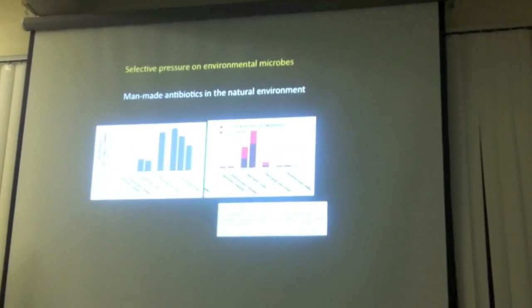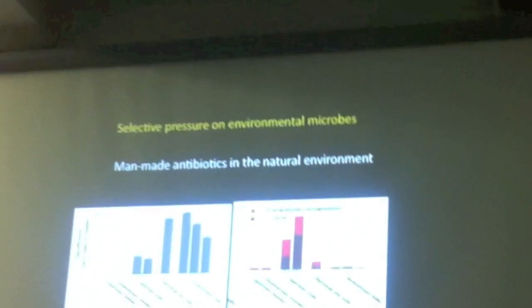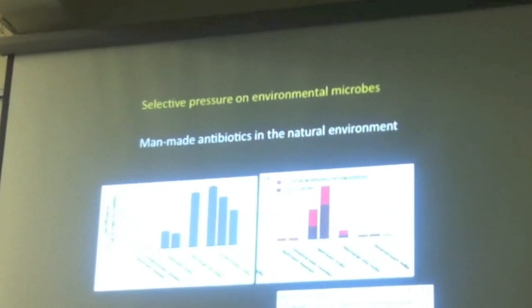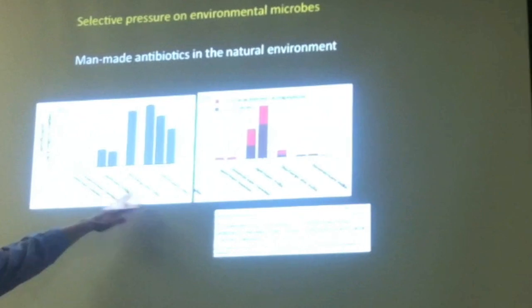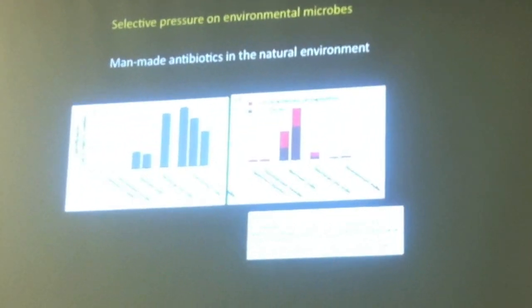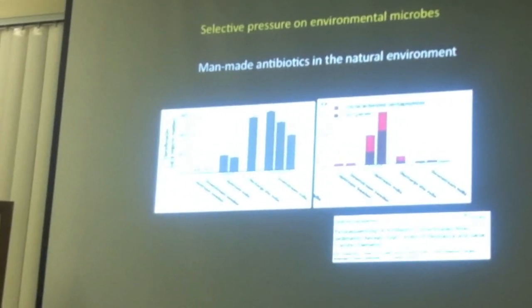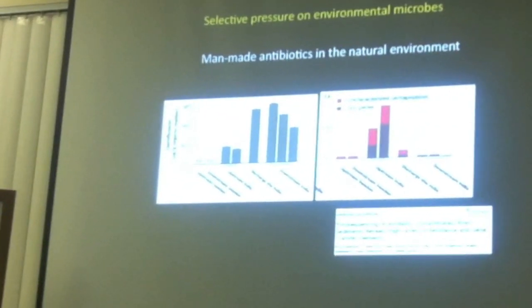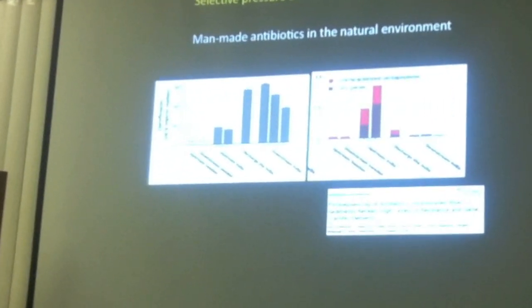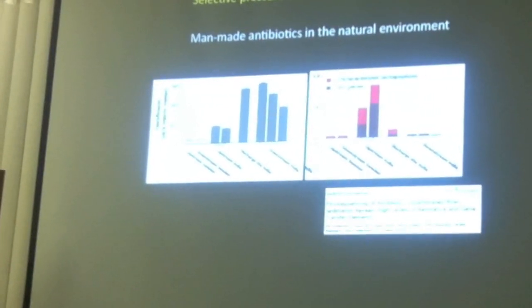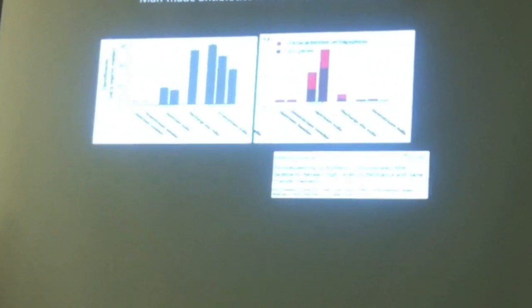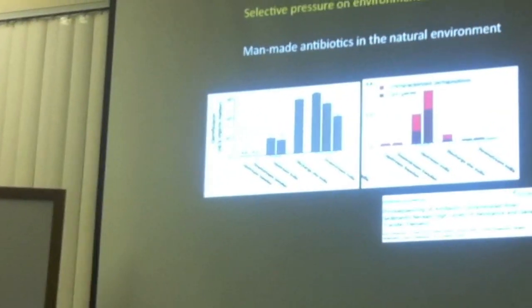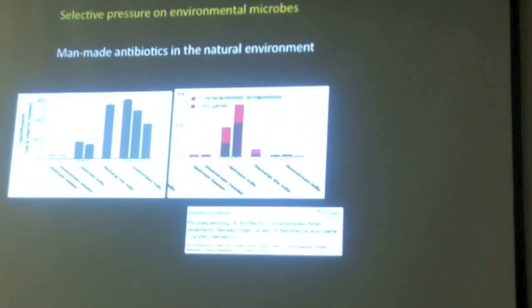A very recently published study emphasized this in a chilling way. Researchers looked in Sweden and India — upstream and downstream of a pharmaceutical plant along a river in India. They found much higher levels of antibiotics in the environment near the plant, and if you looked at microorganisms in the water or soil there, you found a large number of resistance genes against that class of antibiotics. That particular antibiotic was ciprofloxacin, which we use clinically all the time. This has nothing to do with medicinal use — it's about industrial processing and leakage of antibiotics into the environment.